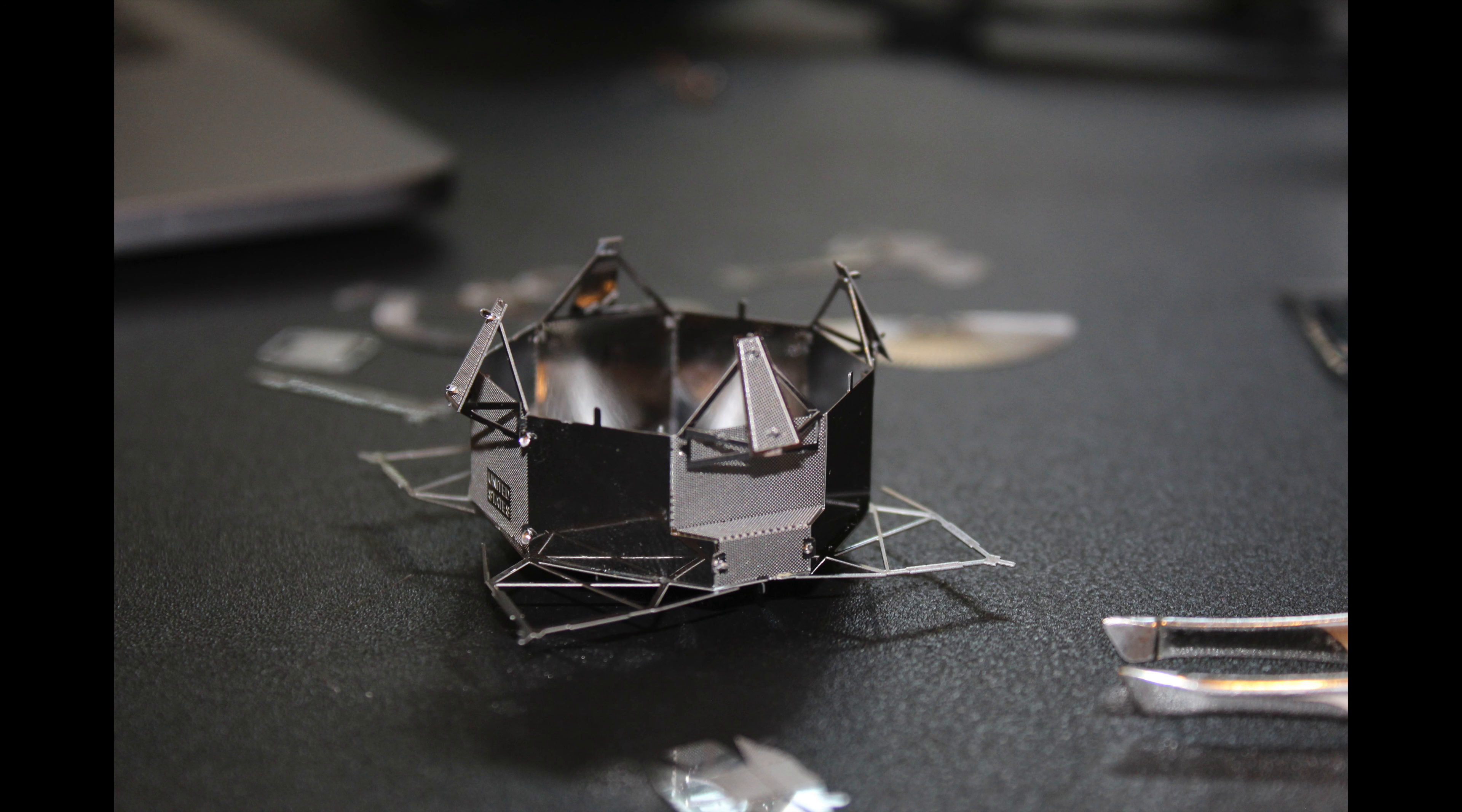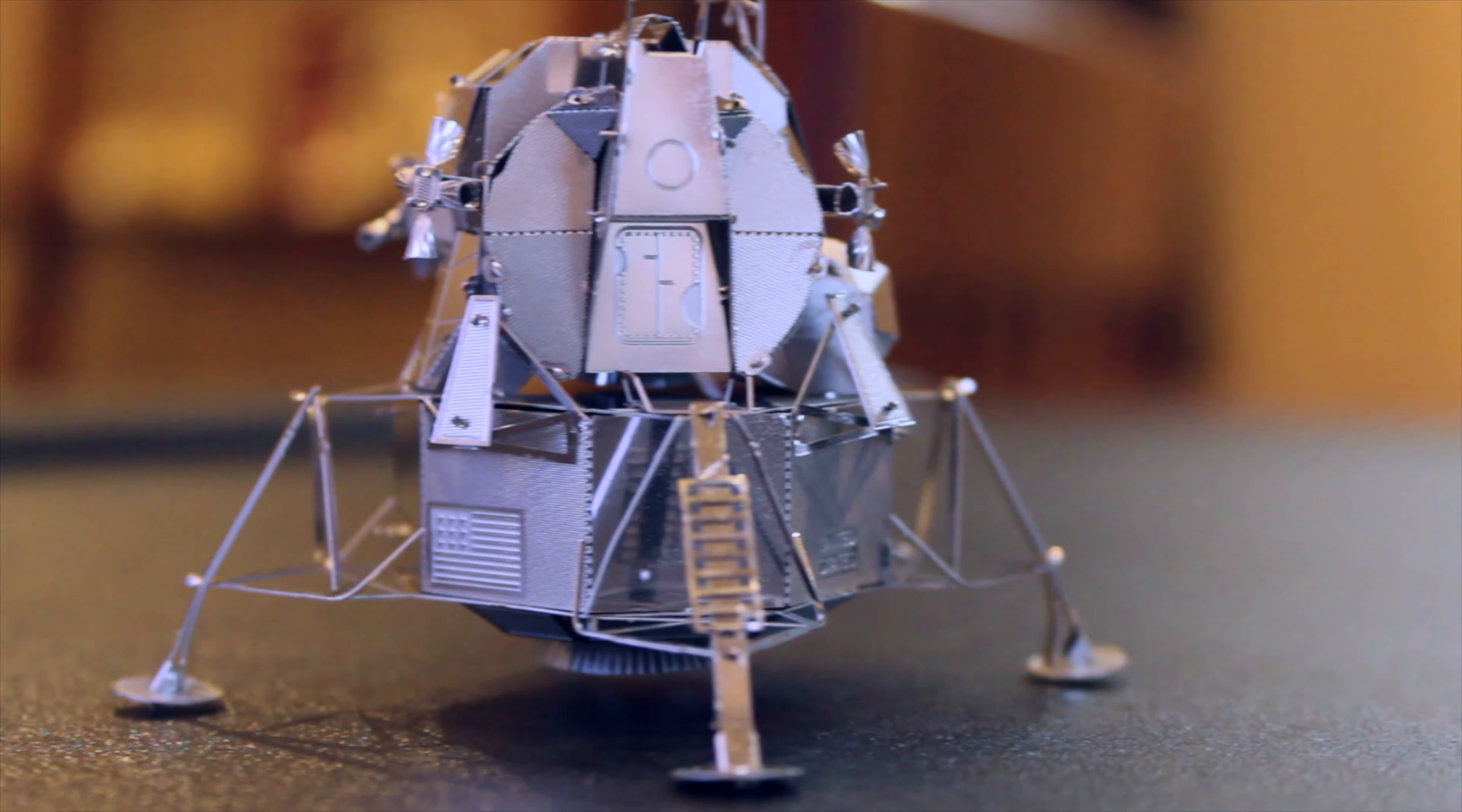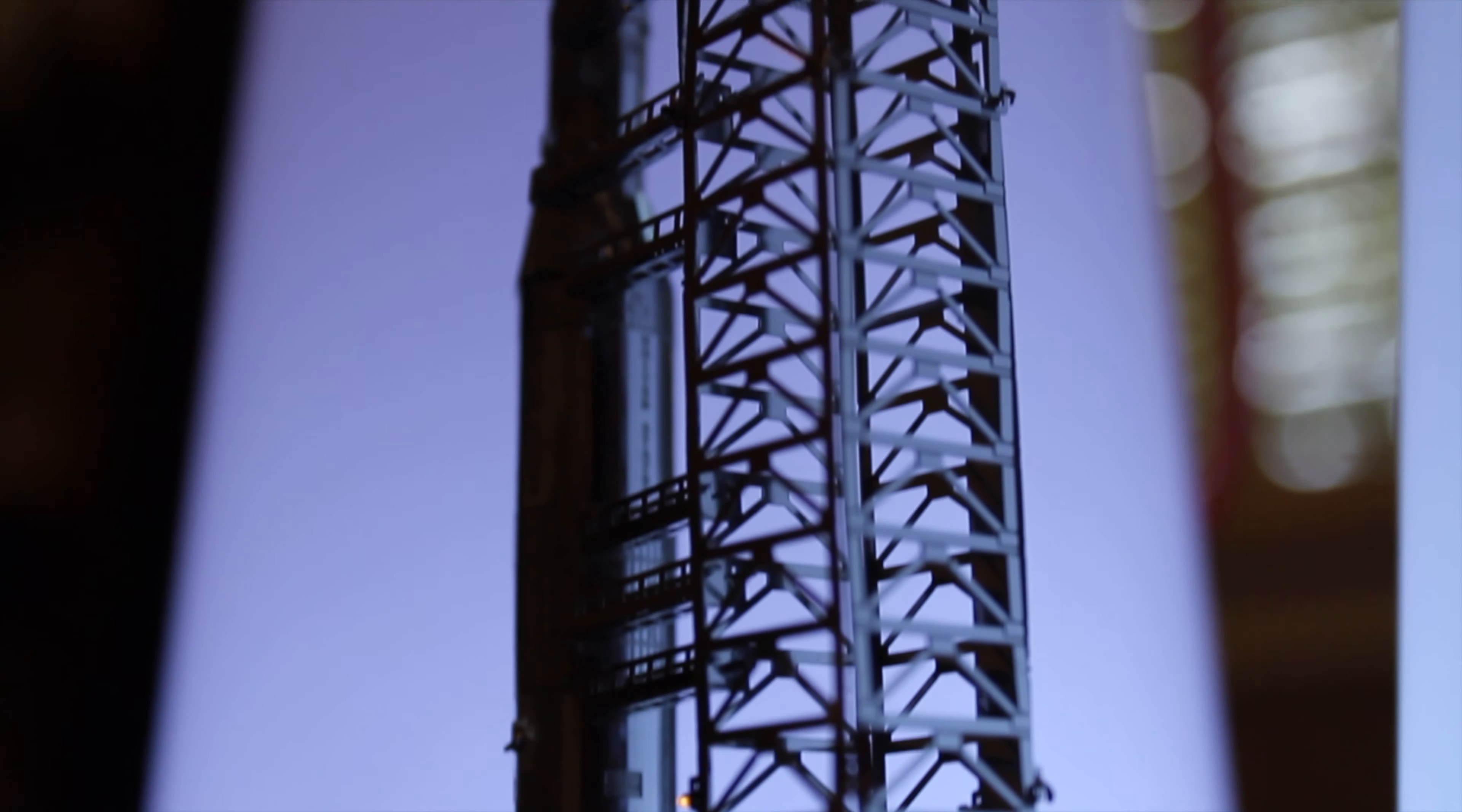I will say, my fellow citizens, we shall send to the moon 240,000 miles away from the control station in Houston, a giant rocket, more than 300 feet tall, made of new metal alloys, some of which have not yet been invented. Fitted together with a precision better than the finest watch, carrying all the equipment needed for propulsion, guidance, control, and communication on an untried mission to an unknown celestial body, and then return it safely to Earth, re-entering the atmosphere at speeds of over 25,000 miles per hour, causing heat about half that of the temperature of the sun, almost as hot as it is here today. And do all this, and do it right, and do it first, before this decade is out, and we must be bold.